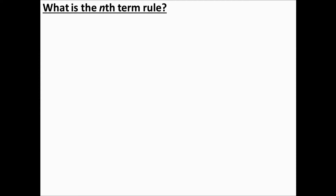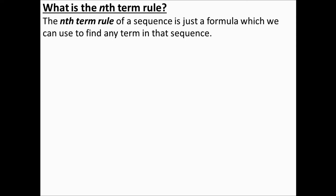Now we can start looking at the nth term rule of the sequence. The nth term rule of a sequence is a formula which we can use to find any term in that sequence. So earlier on we found the 50th term, but the nth term rule will allow us to find any term — the hundredth term, the millionth term, any term you want in that sequence.